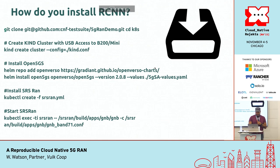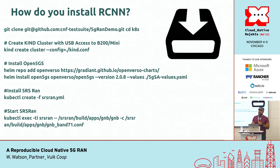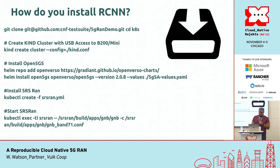So how do you install this thing? You've got your usual suspects: install kind, then install a repo called the Open Verso repo for Open5GS — that's the core — but you have to use our values when you do that. Then you need to install SRS RAN with our manifest, which is specific to the equipment: the B200 and Band 3, which the OnePlus 10T works with. Other phones work with different bands. And then you'd do a kubectl exec in order to start the gNodeB.